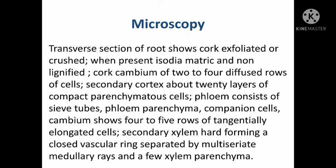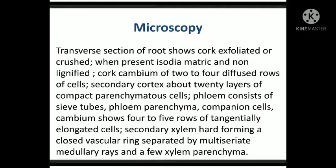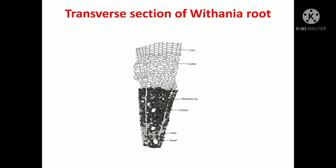When we take the section of Withania root, that is Ashwagandha root, it shows first a cork layer, below the cork the cortex layer, below the cortex we observe the parenchyma, and we observe the xylem and phloem in the center position.